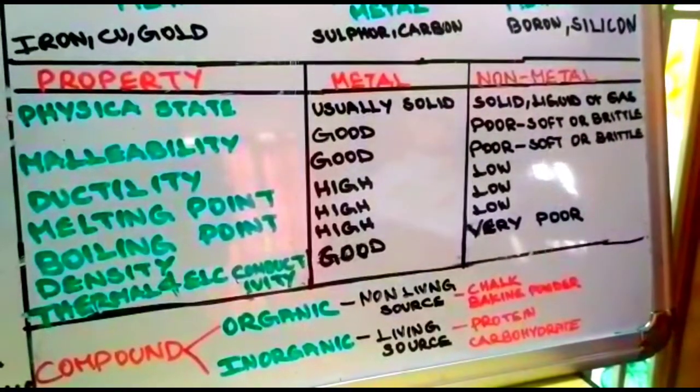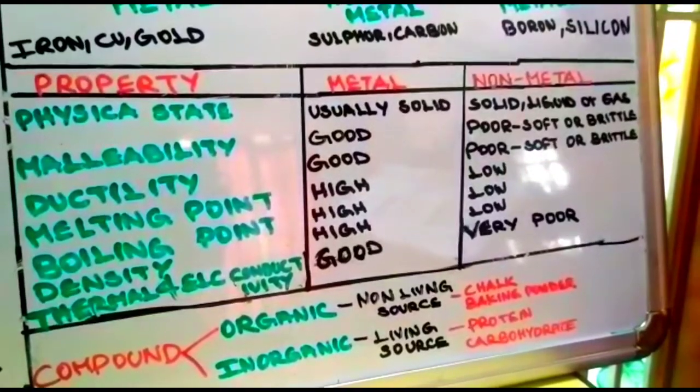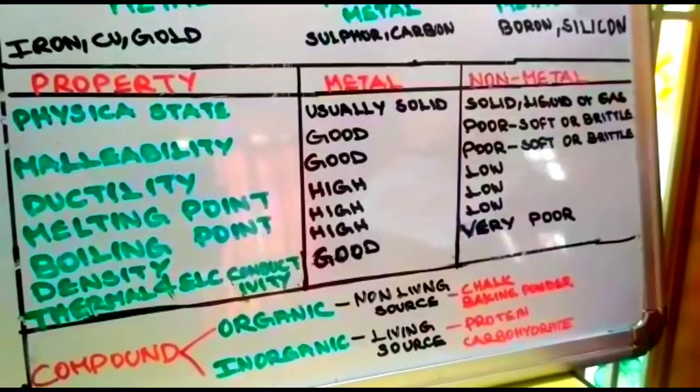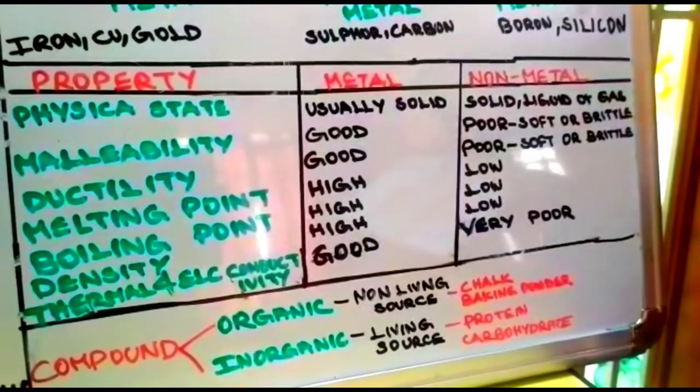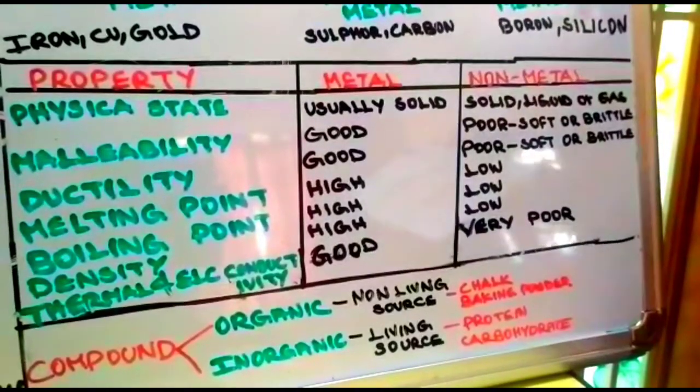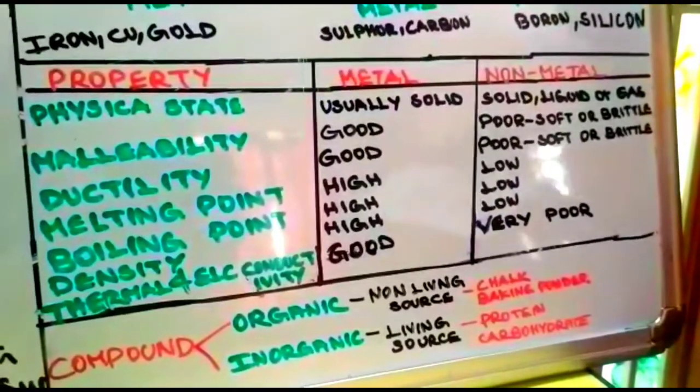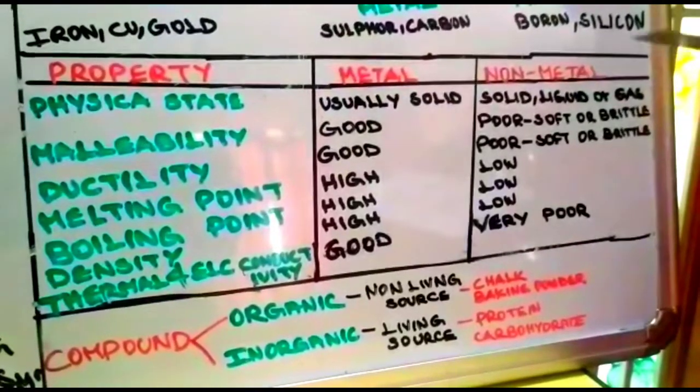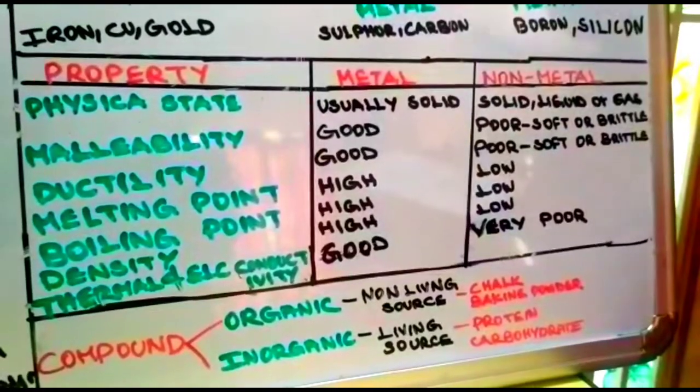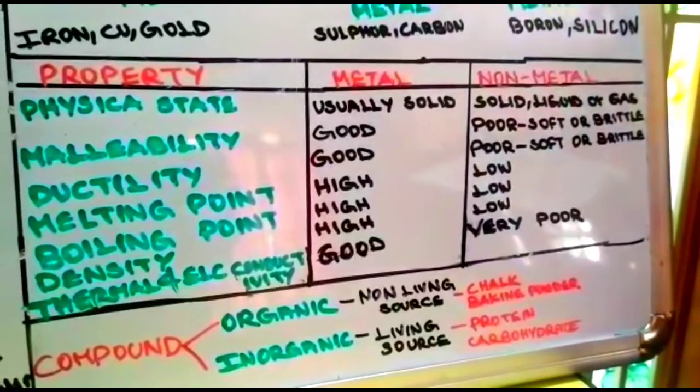The uses of non-metals: diamond is used for making jewels, cutting and grinding equipment. Sulfur is used for manufacturing gunpowder and vulcanization of rubber. Phosphorus is used for matchboxes—the red side is made of phosphorus. Nitrogen is used for manufacturing ammonia. For metalloids, silicon is used in electronic devices and boron is used in fireworks and for fuel for ignition in rockets.